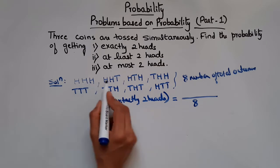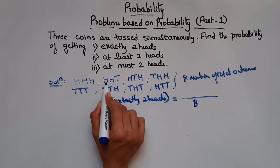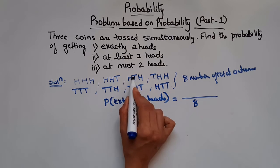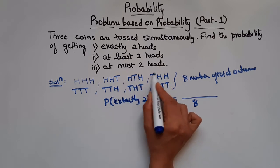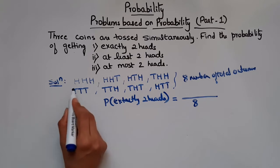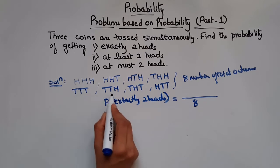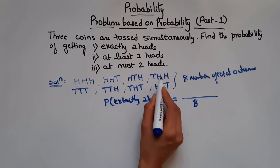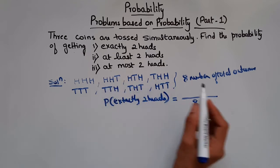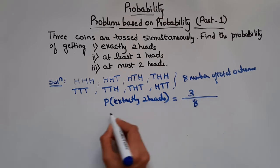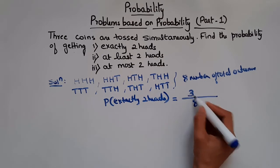Now check which outcomes have exactly 2 heads. Head head head has 3 heads — not included. Head head tail has 2 heads: that's 1. Head tail head has 2 heads: that's 2. Tail head head also has 2 heads: that's 3. So 3 outcomes have exactly 2 heads. Therefore probability of getting exactly 2 heads is 3 by 8.